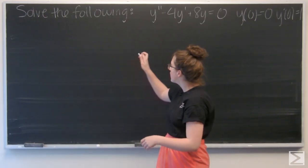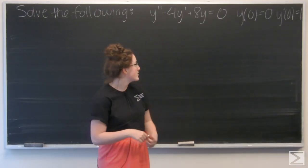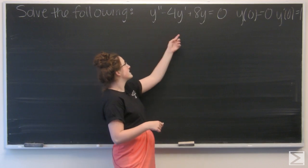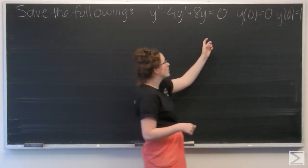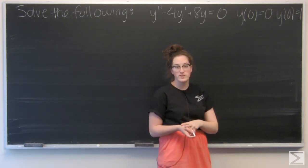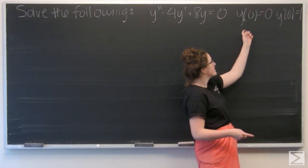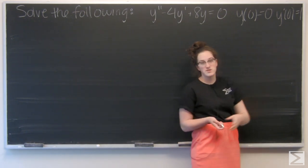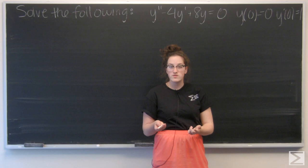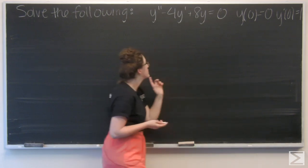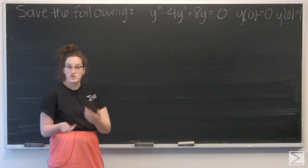This question asks us to solve the following homogeneous equation: y'' - 4y' + 8y = 0, and I'm given two initial conditions: y(0) = 0 and y'(0) = 1. So I'm going to use Laplace transforms to solve for y, and let's just get started.